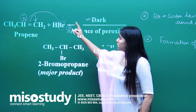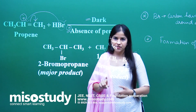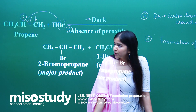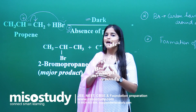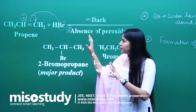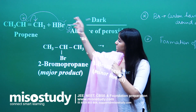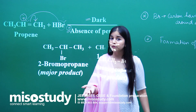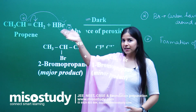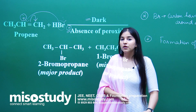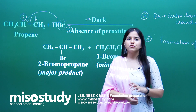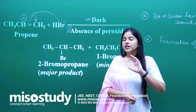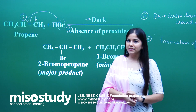Now, why HBr? Why not HI, HCl, or HF? HI, HF, and HCl will all have an unfavourable reaction with such alkenes — although the reaction happens, it is unfavourable because some of the steps are endothermic, meaning we have to provide heat. But in the case of HBr, all the steps are exothermic. Exothermic means they release energy and lead to stability. So HBr gives a very stable and very favourable reaction — that is why we prefer HBr in Markovnikov's rule.